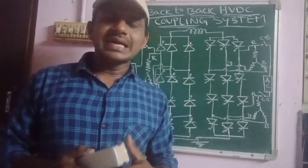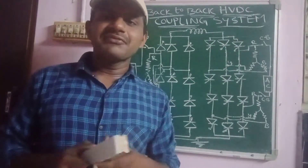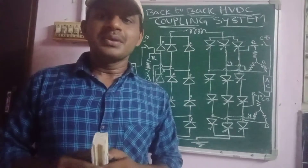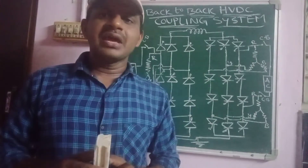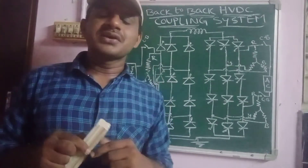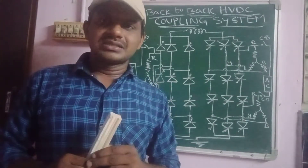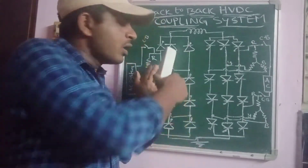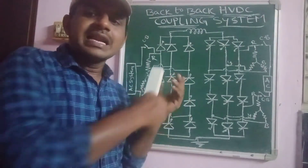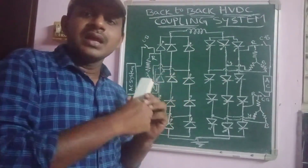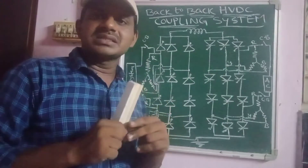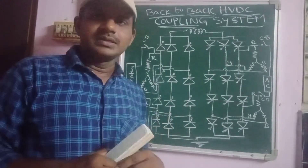In a back-to-back HVDC coupling system, we are using basically two types of converter stations: one station acts as a rectifier station and another station acts as an inverter station.